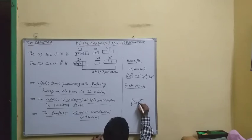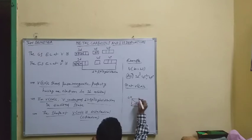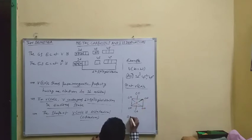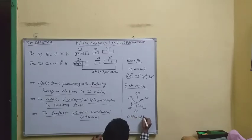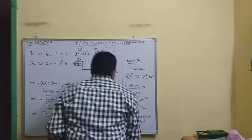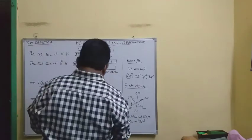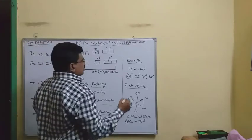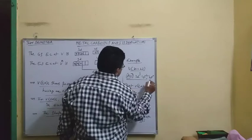Vanadium is the central atom bonded to six CO molecules, giving an octahedral shape with D2sp3 hybridization. Vanadium has atomic number 23, with configuration argon 3d3 4s2.